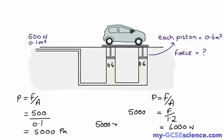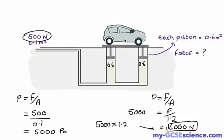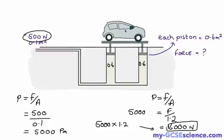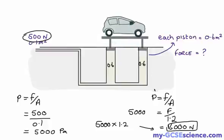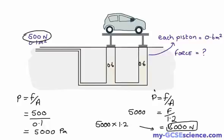So we started off with a force of 500 newtons over here, but because of the rules that we've just discussed and the formulas that we've just used, we've now got a force of 6000 newtons. A force of 500 newtons is turned into a force of 6000 newtons, and that force can then be used to lift up our car so our mechanic can happily work on what he needs to work on.